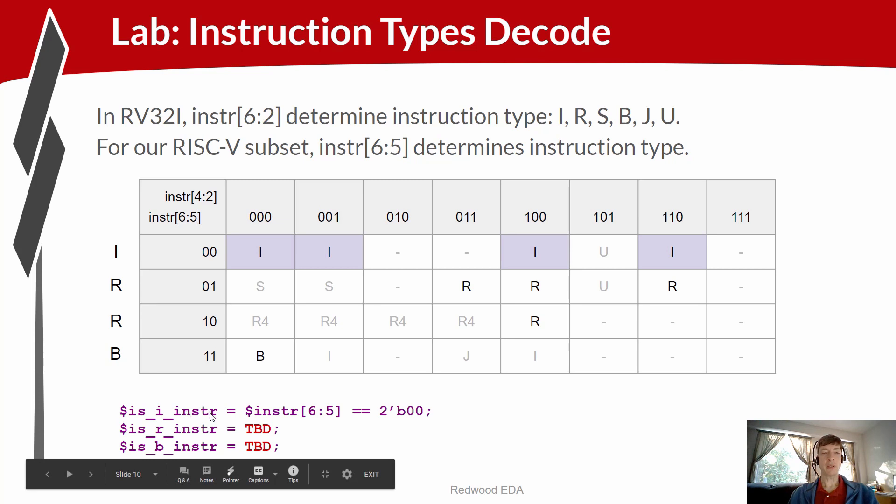So we've got three signals that you're going to assign. The first one's done for you, the ISI type, ISI instruction.